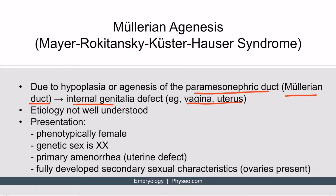These patients are phenotypically female with a genetic sex of XX. However, they have an absent or defective uterus, and as a result, will often first present with primary amenorrhea. The patient doesn't have a uterus, so no endometrial shedding will occur, and the patient will not have a menstrual cycle.